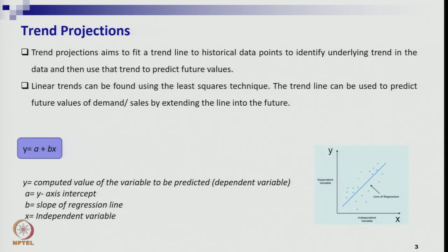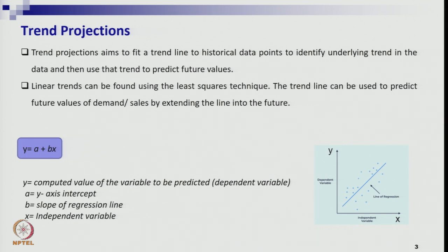Let us first discuss trend projections. In the session on components of time series, we discussed four major components: trend, seasonality, irregularity or randomness, and cyclical. If the historical data has a trend, you need to understand the behavior of the data — whether there is an uptrend or downtrend. After drawing a graph and analyzing the data, if you realize there is a trend, you must make a forecast according to that trend pattern.